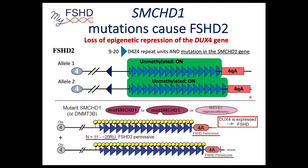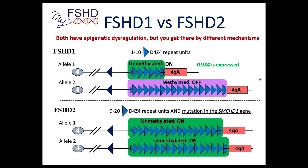This is why it's called digenic: the first gene part is the D4Z4 with a 4QA region, and the second genetic part is the SMCHD1 mutation. So FSHD1 and FSHD2 both have epigenetic dysregulation of the 4QA region. In FSHD1, you break the signal — the signal that says turn me off is broken, it's unmethylated, and DUX4 is expressed. In FSHD2, the signal is there but the switch is broken — it says turn me off, but it can't be, because of mutations in the SMCHD1 gene.